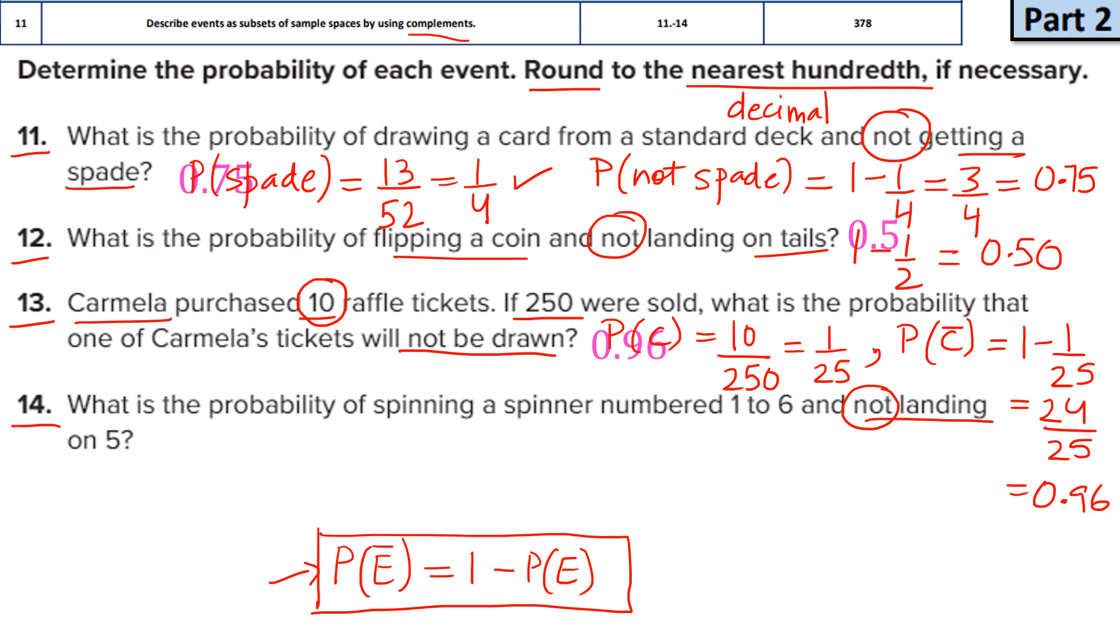Let's do the last one. What is the probability of spinning a spinner numbered 1 to 6 and not landing on 5? So you don't want 5 to come. And the probability for 5 to come will be 1 out of the total 6 options. There are 6 options. So you subtract from 1 to get the probability of not 5. So not 5 means you write 5 and you make a bar, it means negation. So subtract, take the LCM. It is going to be 5 by 6.